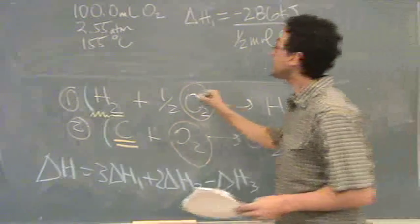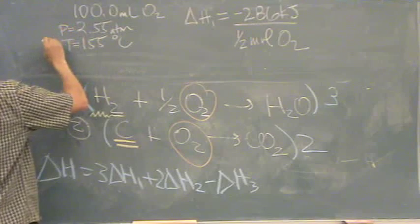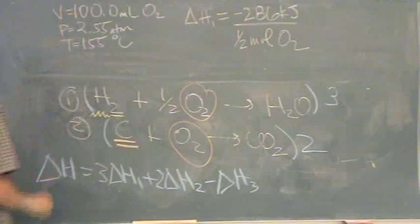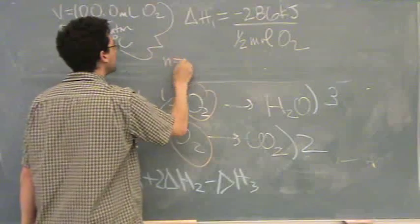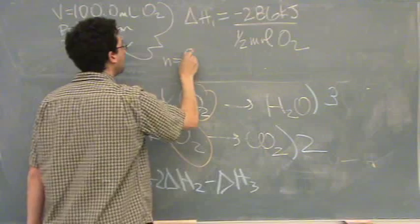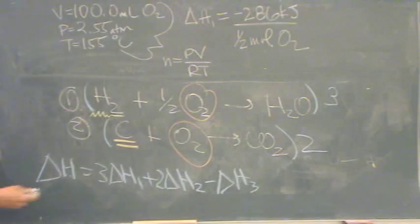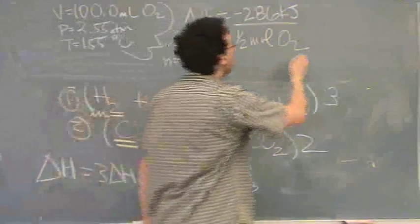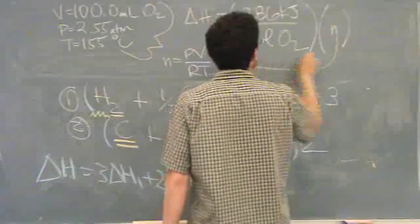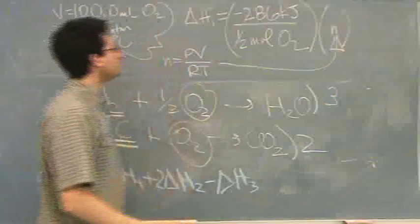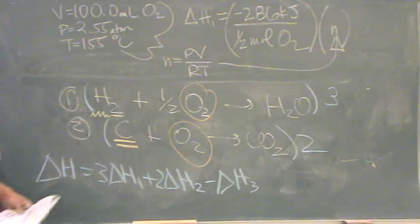Now I'm going to use this information here. I've got T. I've got P. And V. I'm going to solve for moles. I'm going to use this with the ideal gas law. Moles is PV over RT. I have all those values. Once I get N, I'm going to multiply this whole quantity by N. So now I have, for that specific reaction, delta H.